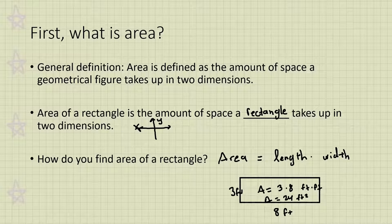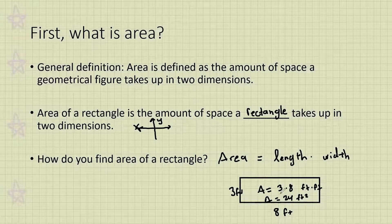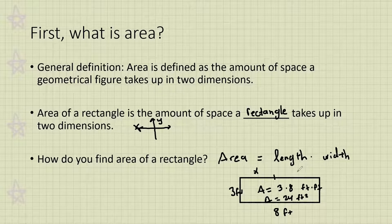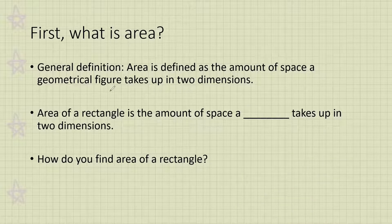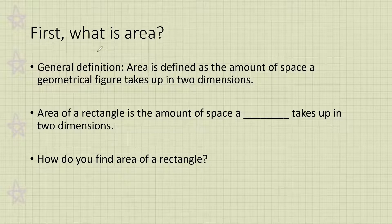We've done a lot of these problems before. Today we're going to introduce how we can apply the distributive property when we don't know a side — for example, we don't know what one measurement is, but we do know the partial measurements. That was a quick recap: area is equal to the length times the width.